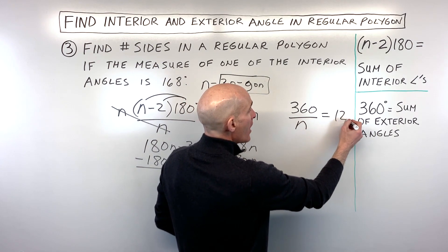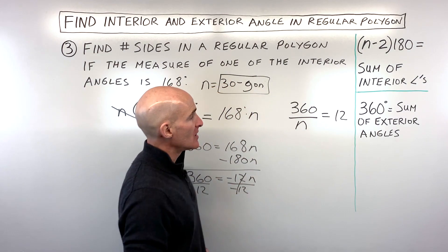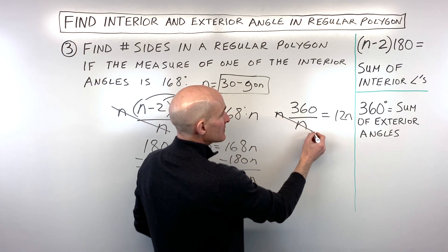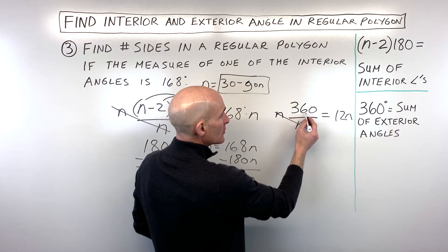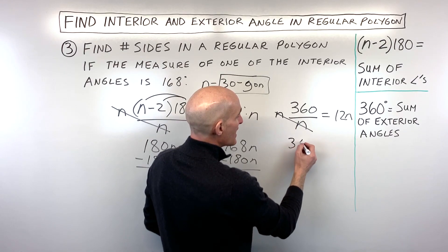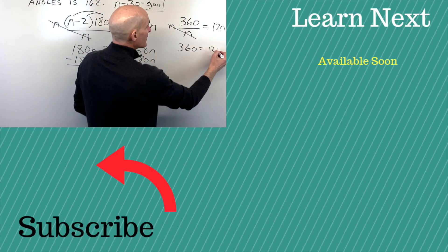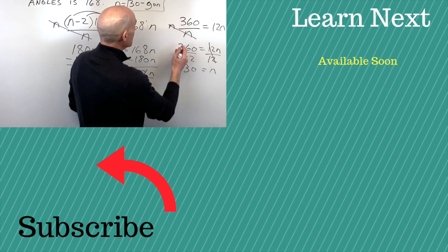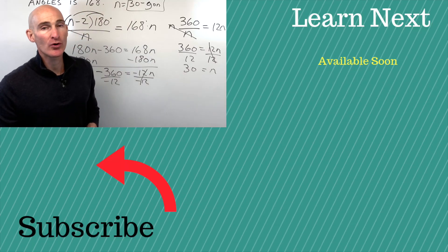Now all we have to do is multiply both sides by n, and you can see we have 12n equals 360, and if we divide both sides of that equation by 12, you can see that n is coming out to 30. Same exact answer. So two different ways to approach that.